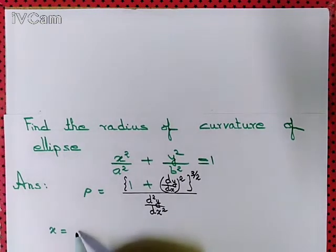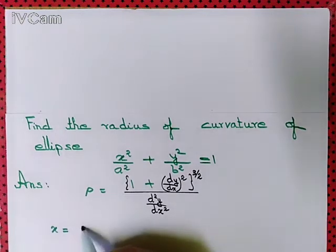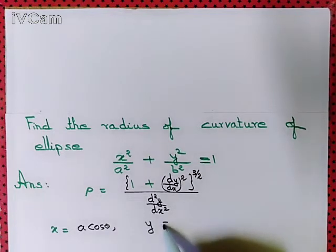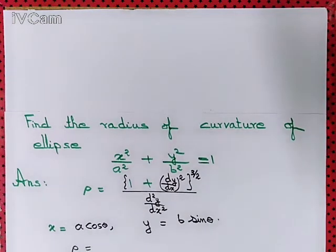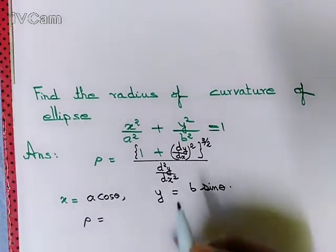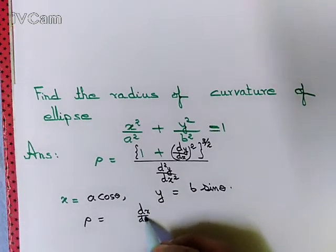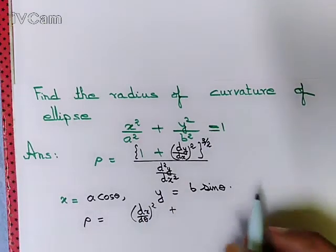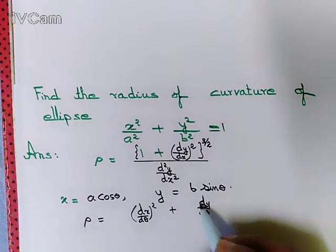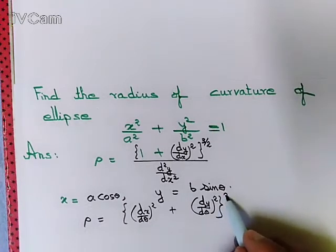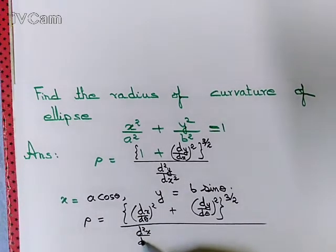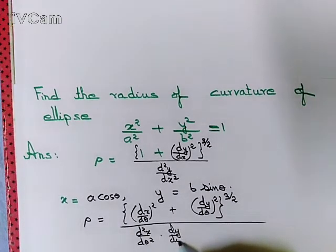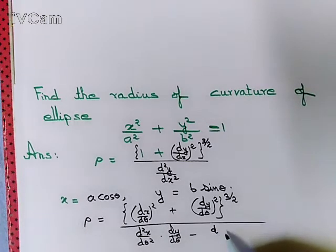So we have x = a·cosθ and y = b·sinθ. Then the radius of curvature equals ((dx/dθ)² + (dy/dθ)²)^(3/2) divided by (d²x/dθ²·(dy/dθ) − (dx/dθ)·d²y/dθ²).